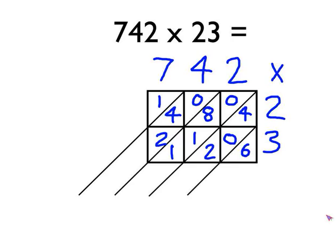And then we just literally add up the columns using column addition. So, start on the right-hand side. That first column, that first diagonal column is 6. The next column along is 4, add 0, add 2 is 6. Next column along, 0, add 8, add 1, add 1 is 10.